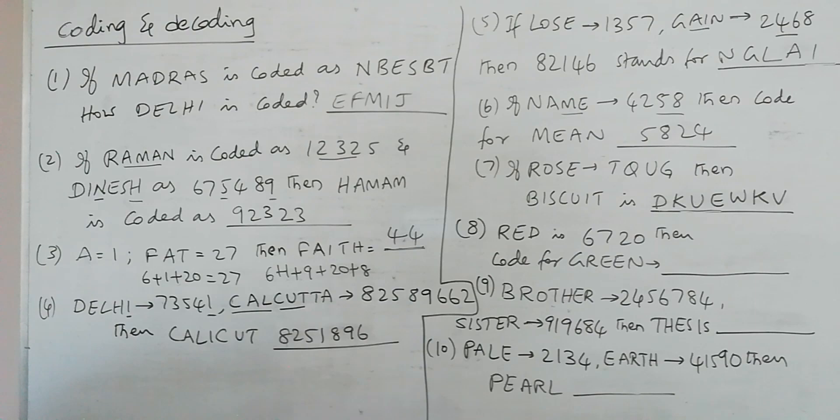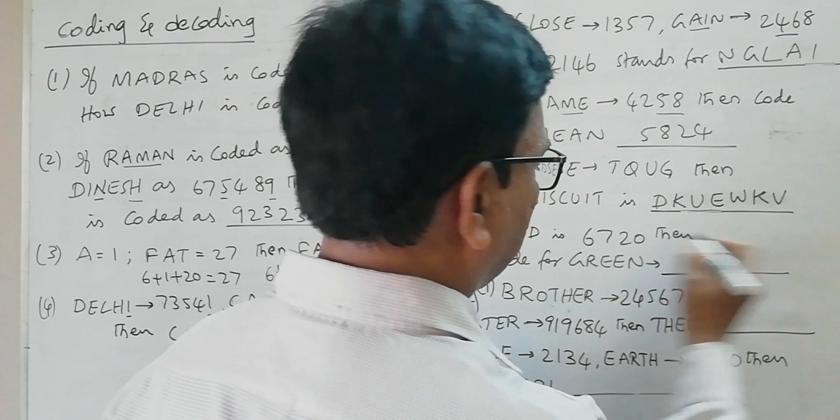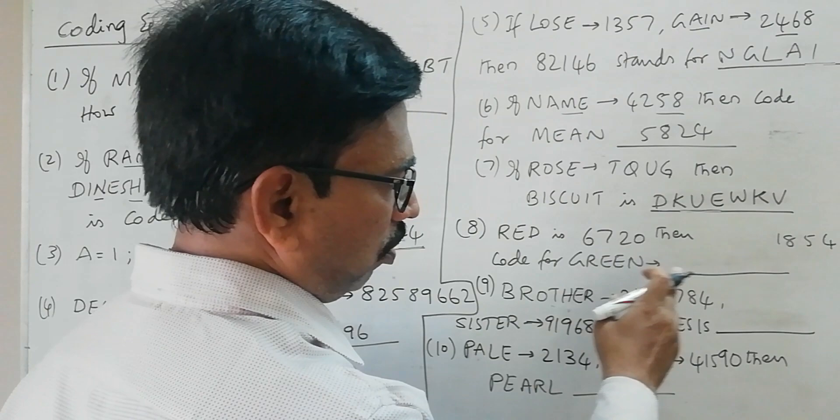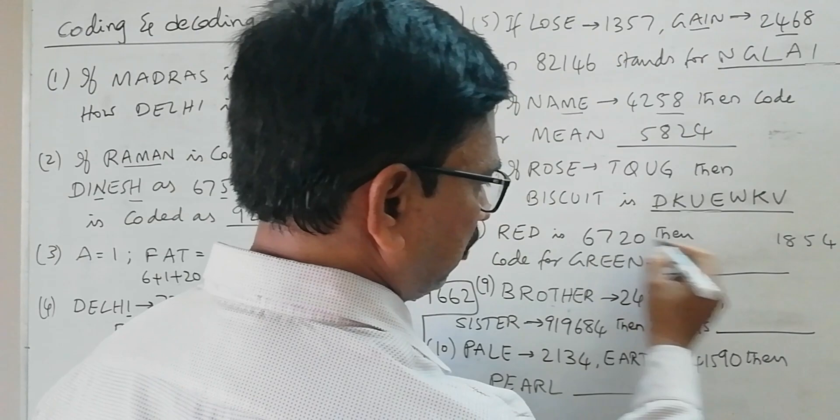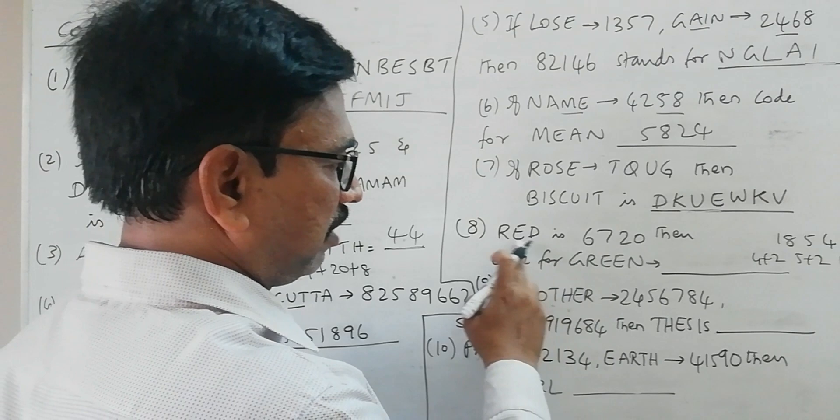This is a typical problem, the 8th one. RED is coded as 6720, then what is the code for GREEN? Now here if you look at the letters R, E, D. R is the 18th letter, E is the 5th letter, and D is the 4th letter. But if you look at the code here, if you take it in reverse order, 4 plus 2 is 6, and 5 plus 2 is 7, and 18 plus 2 is 20. So these three letters have been coded.